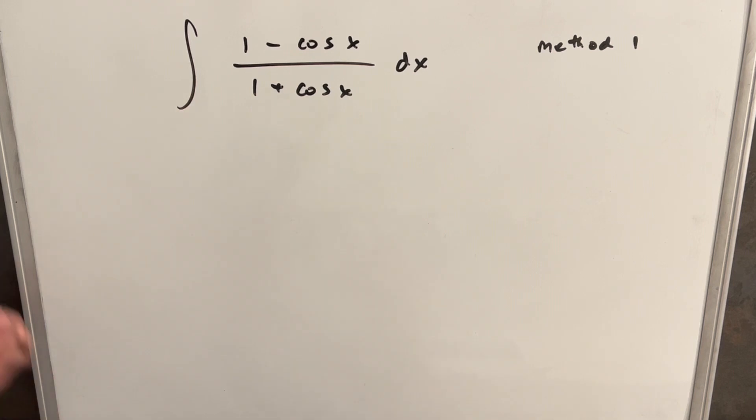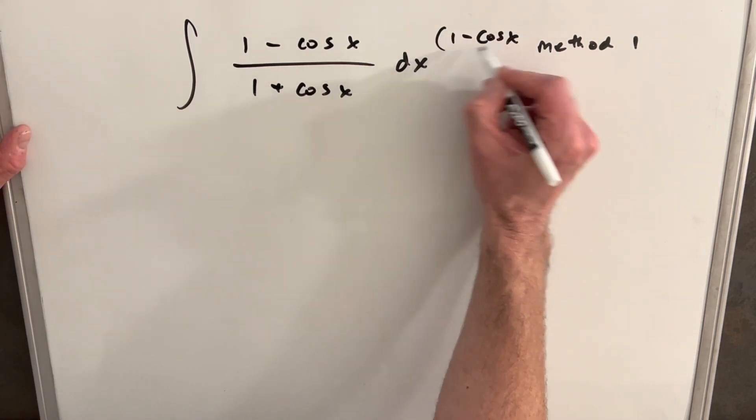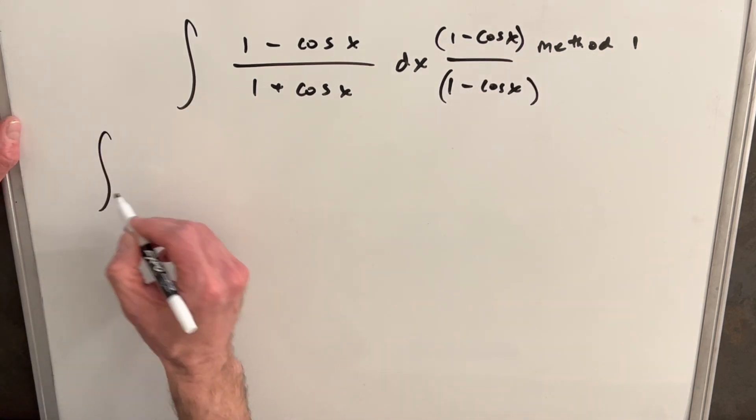For method 1, we'll do something pretty straightforward. We're going to multiply the numerator and denominator by 1 minus cos x. When we do that,